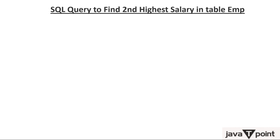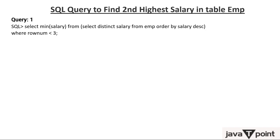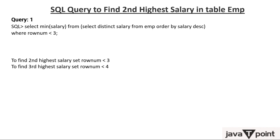Now our task is to find the second highest salary. The query is: SELECT MIN(salary) FROM (SELECT DISTINCT salary FROM imp ORDER BY salary DESC WHERE ROWNUM < 3). To find the second highest salary, we use ROWNUM less than 3.